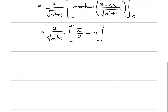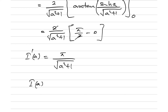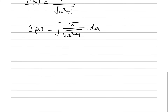So I'(a) simplifies to π over sqrt(a²+1). Now we integrate with respect to a: I(a) = the integral of π / sqrt(a²+1) da. We can factor out the constant π, and the integral of 1/sqrt(a²+1) da is the inverse hyperbolic sine, arcsinh(a), plus a constant C.